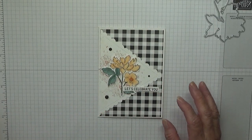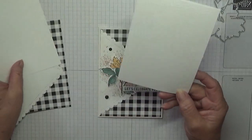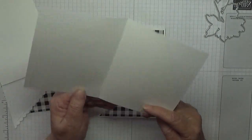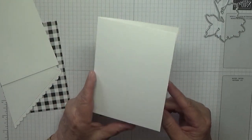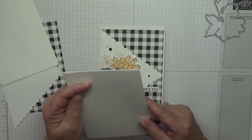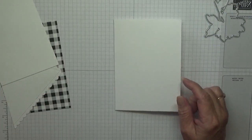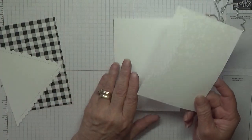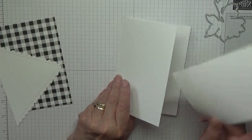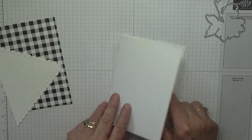The card stock I have got a white card blank card base of eight and a quarter by five and seven eighths, scored at four and one eighths and burnished. I've also got a piece of white at five and five eighths by three and seven eighths for the inside.